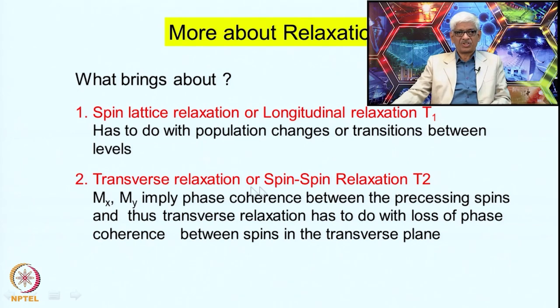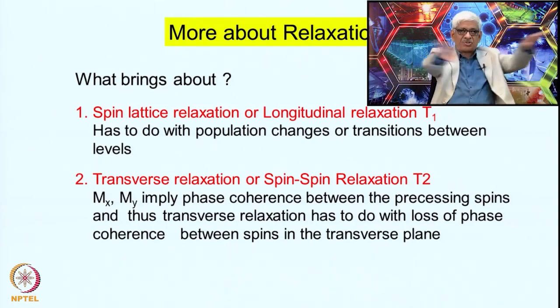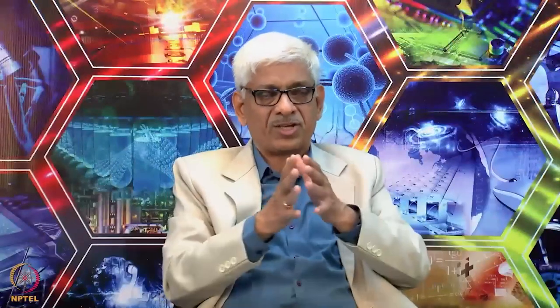The second type is transverse relaxation, related to the transverse components of the magnetization — T2 appears in the Bloch equations for MX and MY, while T1 appears in the equation for MZ. The transverse relaxation has to do with the loss of phase coherence between spins in the transverse plane. At equilibrium there is no transverse magnetization, but creating coherence between spins moving in the transverse plane results in a net MX or MY component. Therefore, anything that causes loss of phase coherence contributes to transverse relaxation.